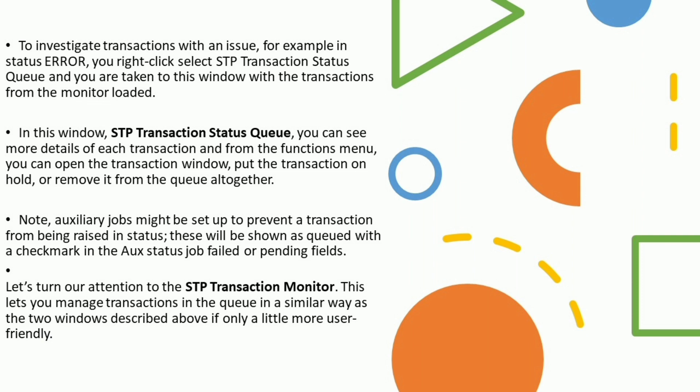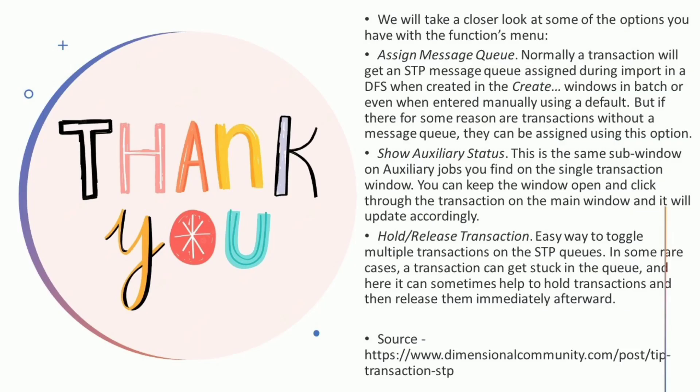The STP Transaction Monitor lets you manage transactions in the queue in a similar way to the two windows described above, but is a little more user-friendly. Looking at some of the options in the Functions menu: Assign Message Queue — normally a transaction will get an STP message queue assigned during import, in a DFS, when created in the Create windows, in batch, or even when entered manually using a default. But if there are transactions without a message queue, they can be assigned using this option.